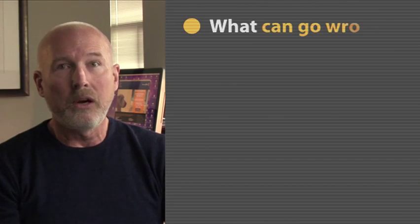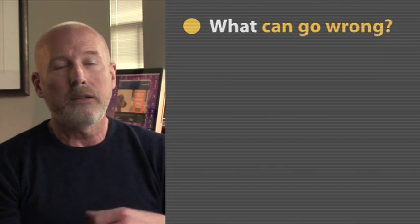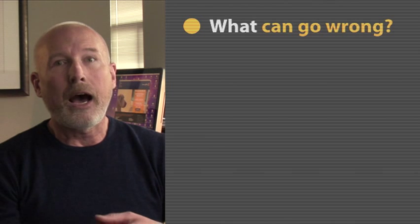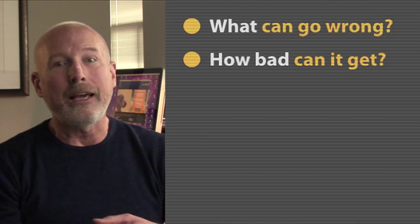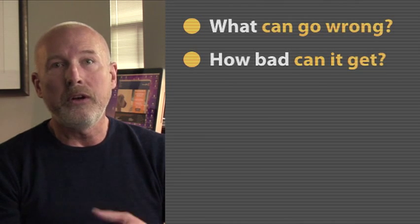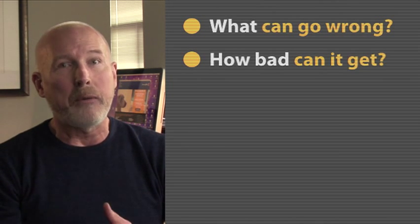Quality risk management has two parts. The first is risk assessment, and the second is risk management. In risk assessment, you're trying to find answers to five different questions. First, what can go wrong? Second, how bad can it get? Third, how could it happen?